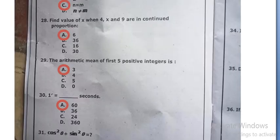The arithmetic mean of first 5 positive integers is 3, option A.